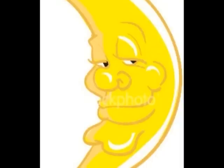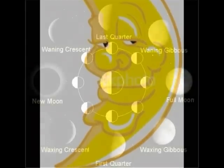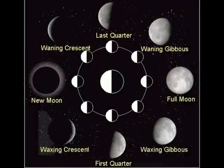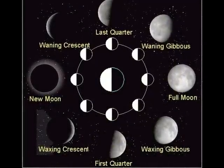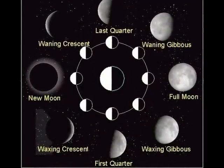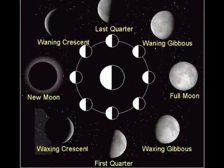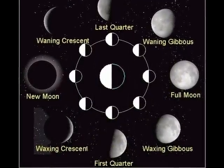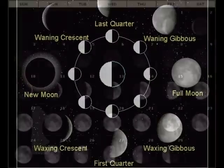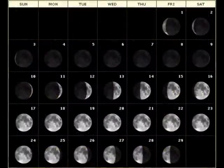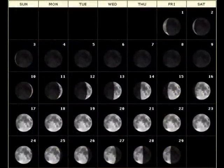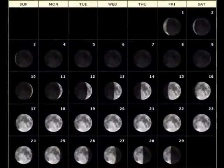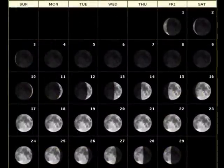The moon produces no light of its own, but reflects the light of the sun. The moon goes through phases each month because of the shadow of the earth. The moon phases can be recorded monthly on a calendar. Now it's your turn to look on a calendar for this month and see if you can track the phases of the moon.